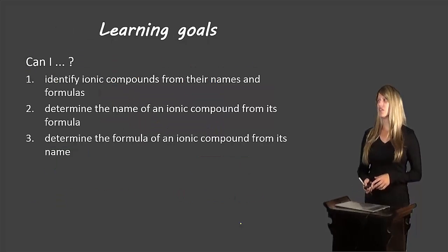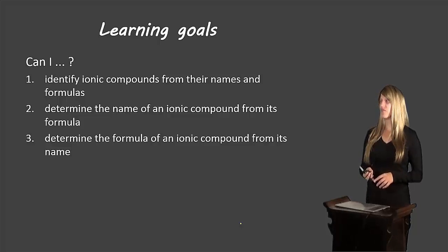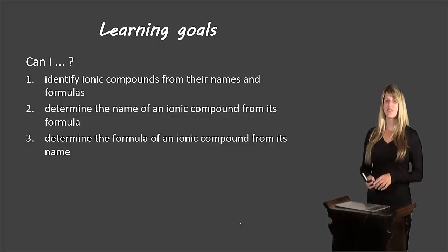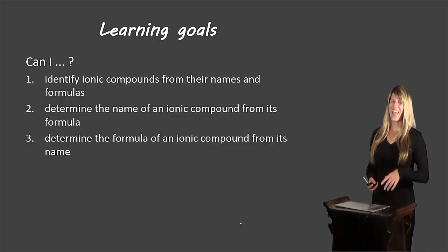So let's take another look at our learning goals. You should be able to identify ionic compounds from their names or formulas, so recognizing that there's a metal and a non-metal put together. Determine the name of an ionic compound from its formula, and determine the formula of an ionic compound from its name. If you can do these things, fantastic. If not, please re-watch the video, and if you're still having trouble, come ask me in class tomorrow. All right, that's all for now. Bye-bye.